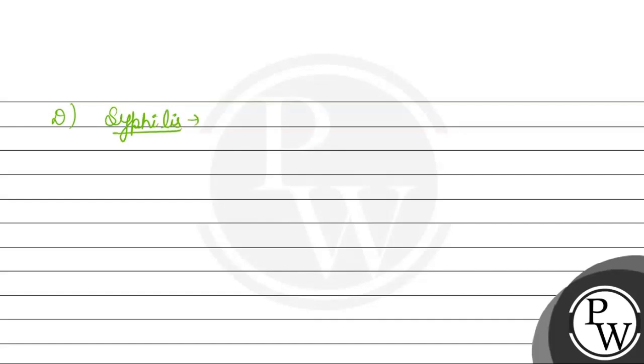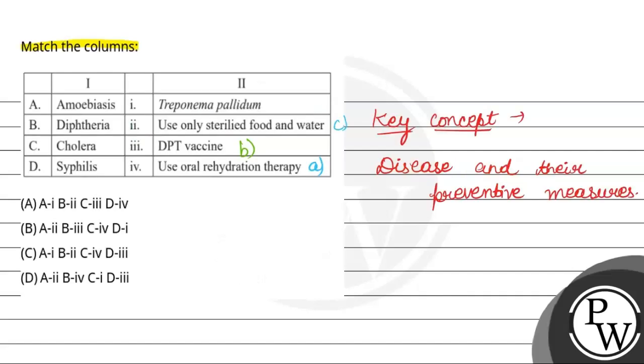Syphilis is a sexually transmitted infection which is a bacterial disease, and this bacteria name is Treponema pallidum. So D Syphilis, first Treponema pallidum.